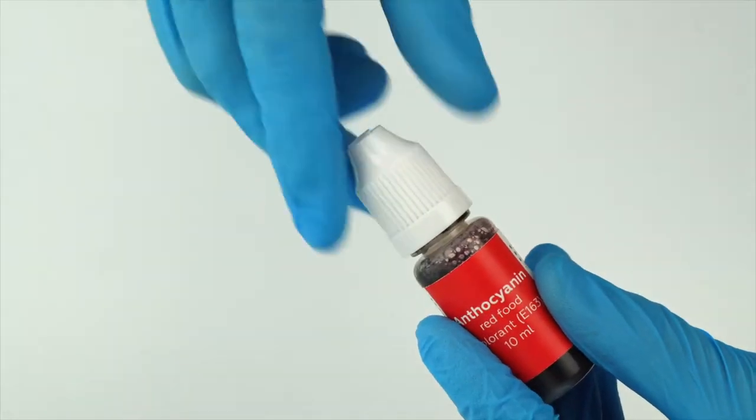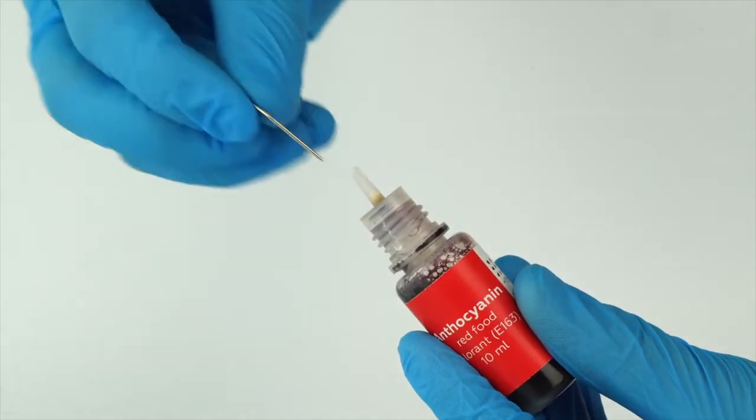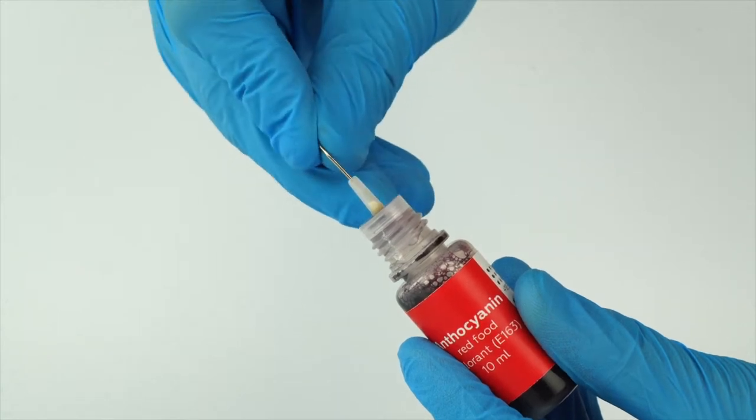To open a bottle containing a reagent, push the cap down and turn it. Pierce the bottle nozzle with an unbent paperclip.